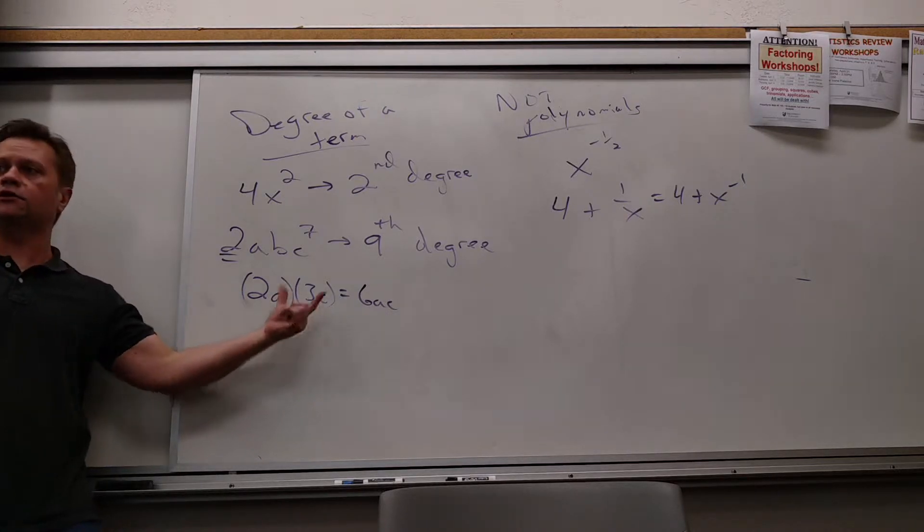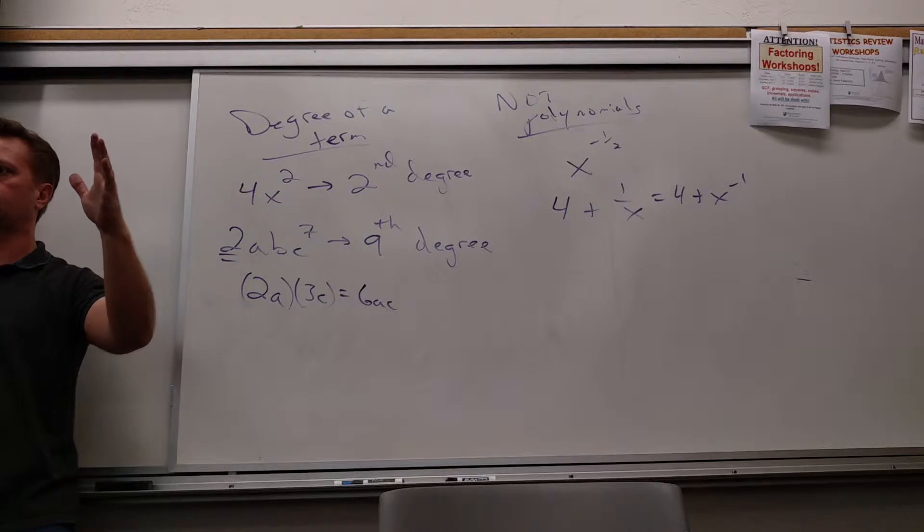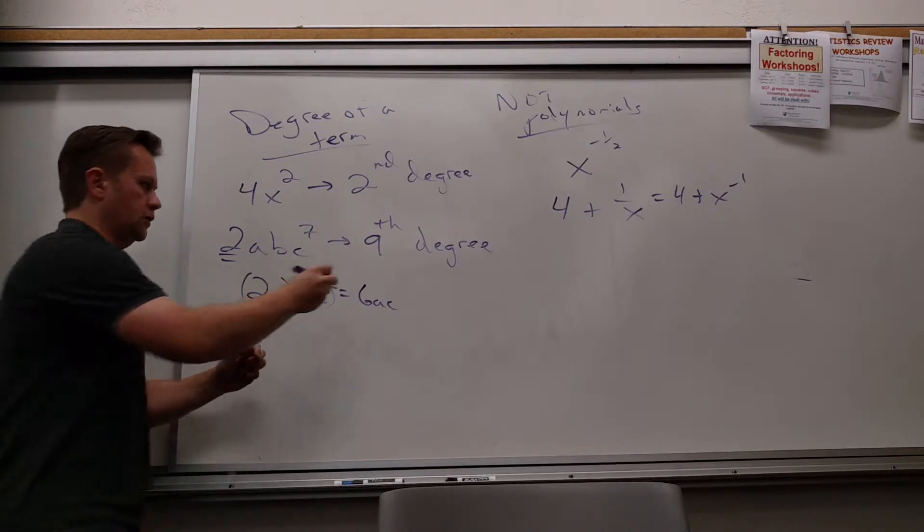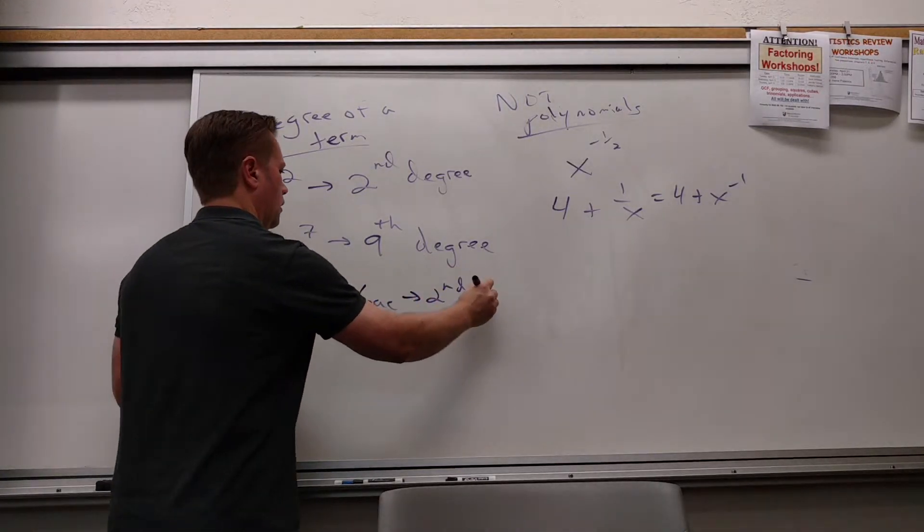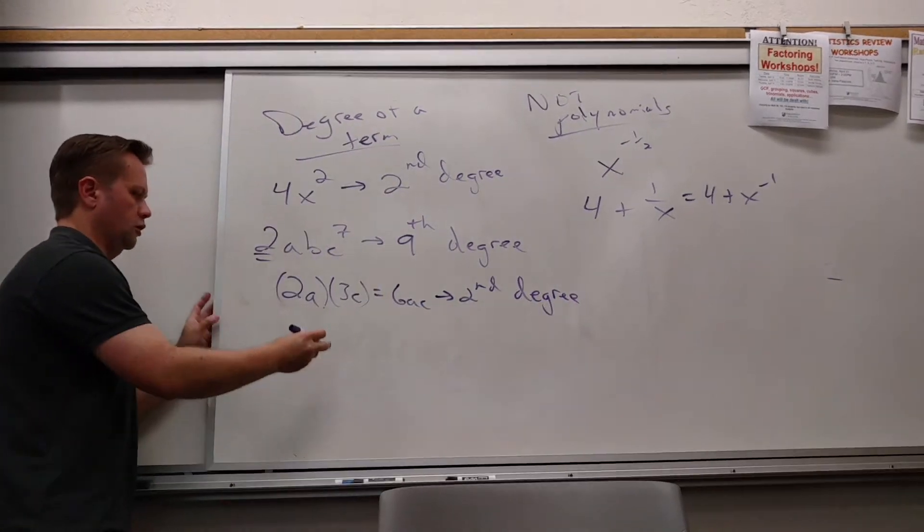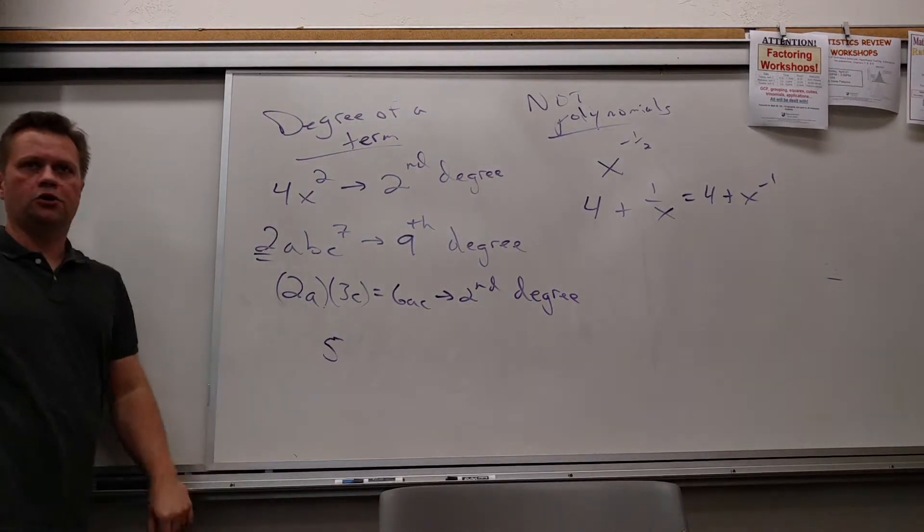So if they give you something to simplify, do that first, and then you can step back and say, what's the degree? This will be second degree. All right, let me blow your minds a little bit. What about that? That is a polynomial. That is a monomial.